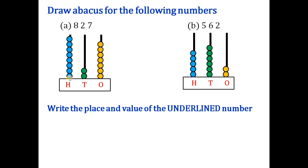In the hundreds place it is 8, so we draw eight balls: one through eight. Next number is 562. In the ones place it is 2, so draw two balls. In the tens place it is 6, so draw six balls: one, two, three, four, five, six.